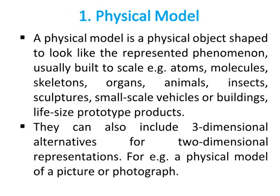The first type is the physical model — a physical object shaped to look like the represented phenomenon, usually built to scale. Examples include atoms, molecules, skeletons, organs, animals, insects, sculptures, small-scale vehicles or buildings, and life-size prototype products. They can also include three-dimensional alternatives for two-dimensional representations, such as a physical model of a picture or photograph.